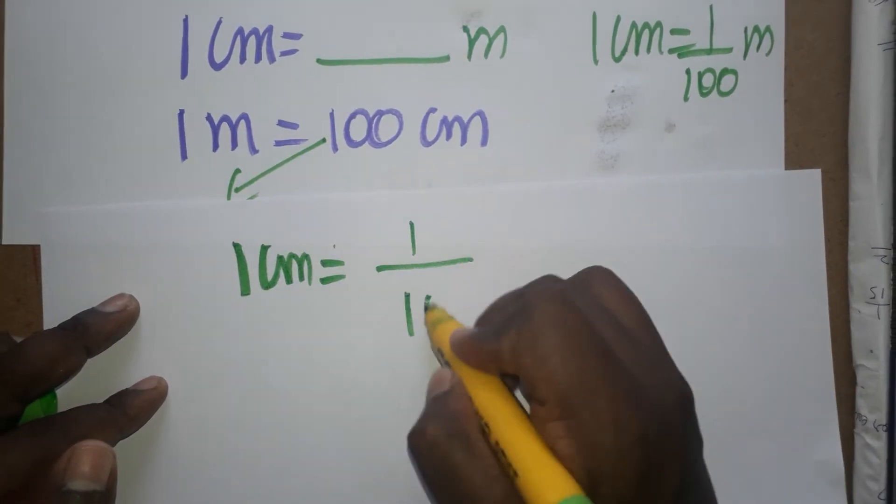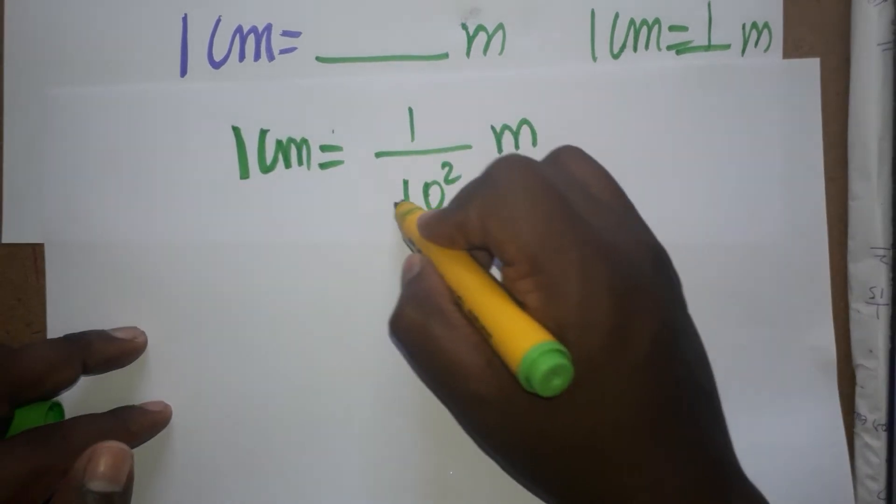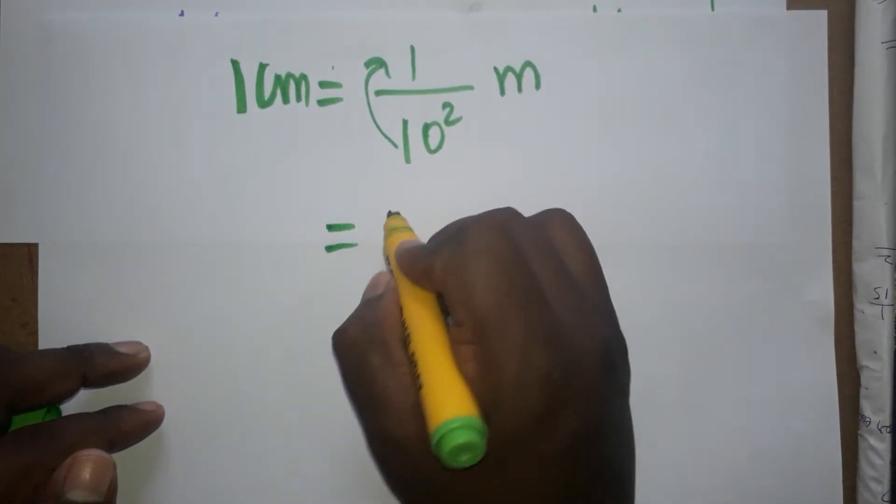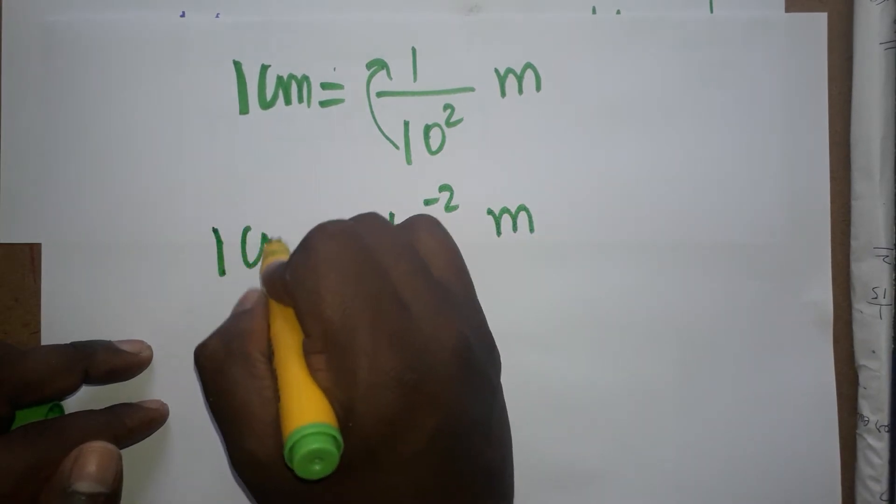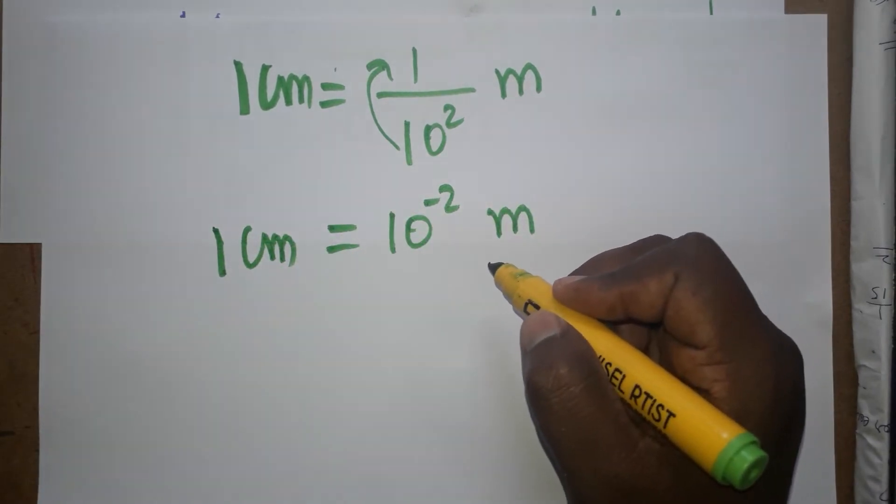If you take from denominator to numerator, it becomes 10 power minus 2. So 1 cm is 10 power minus 2 m.